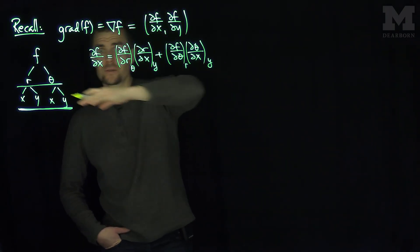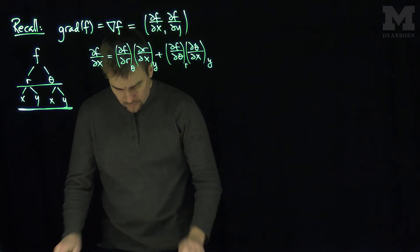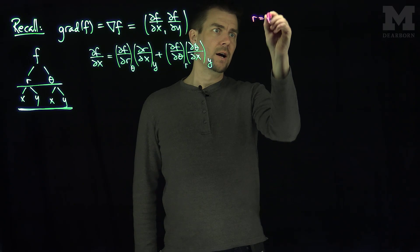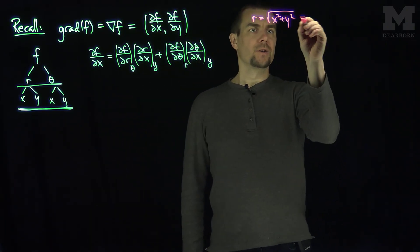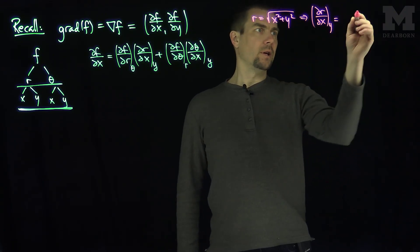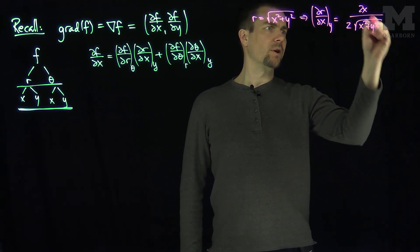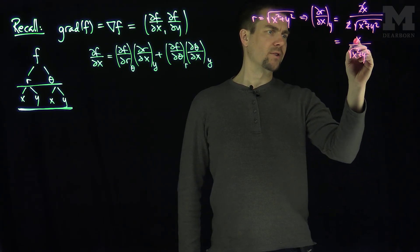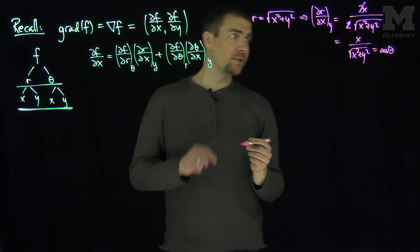In polar coordinates, r = √(x² + y²). Taking ∂r/∂x treating y as constant gives 2x / (2√(x² + y²)) = x / √(x² + y²). Since x = r cos θ and r = √(x² + y²), this simplifies to cos θ. So ∂r/∂x (with y constant) = cos θ.